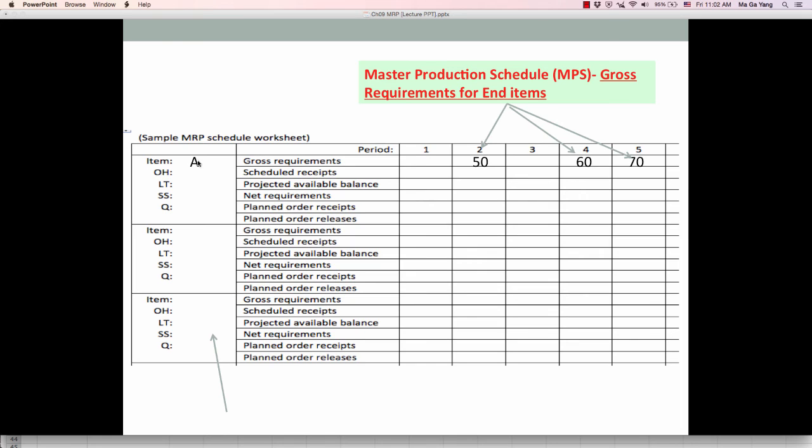And say this is end item A. As I said, we need data from master production schedule, which include the end item information. That's the gross requirement for end items. Here, suppose customer order, customer demands happen in week 2, week 4, and week 5. Week 2, 50 units are required. Week 4, 60 units. Week 5, 70 units. So in order to produce this amount in particular week, we need to calculate related components and parts.